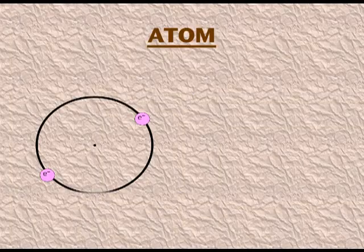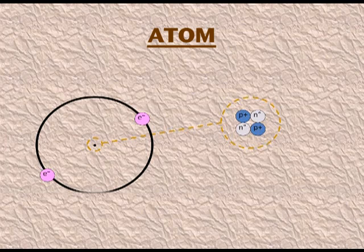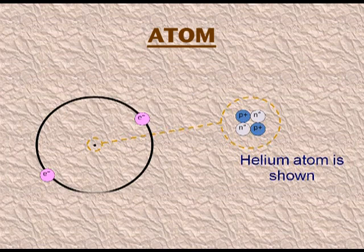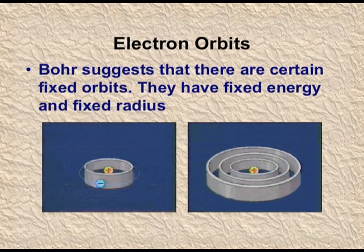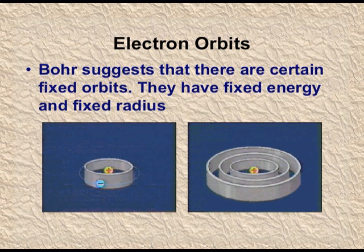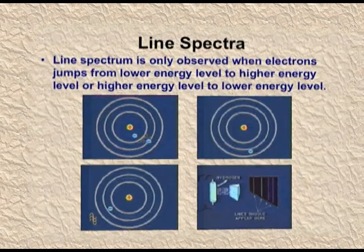You can see the basic structure of an atom — electron in an orbit and the nucleus in the centre. The nucleus is made up of neutrons and protons. Bohr also suggested that there are certain fixed orbits with fixed energy and fixed radius. You can see the concentric rings in this picture — these are Bohr orbits. Line spectra is only observed when an electron jumps from a lower energy level to a higher energy level, or from the higher energy level to the lower energy level.